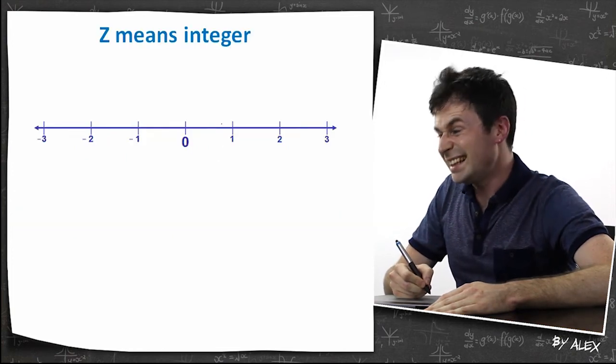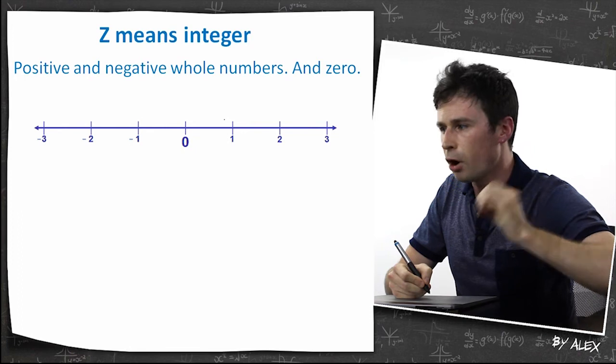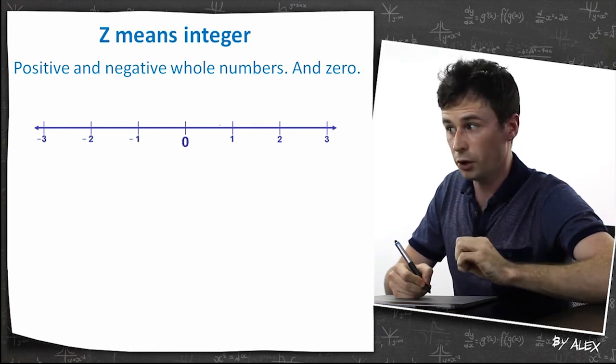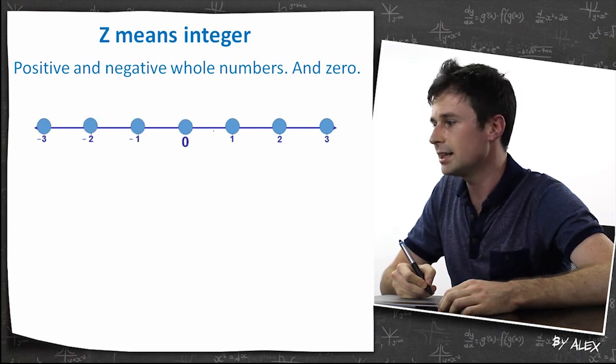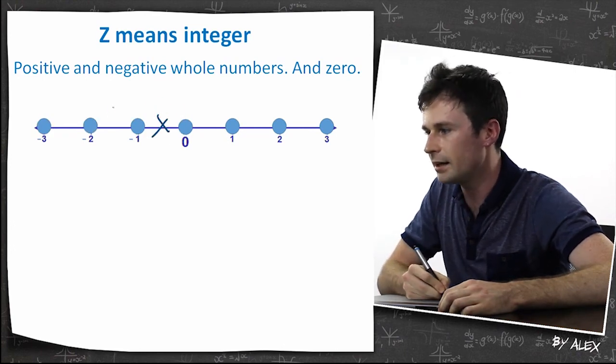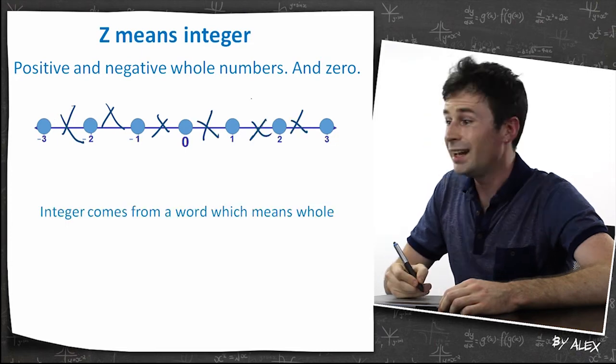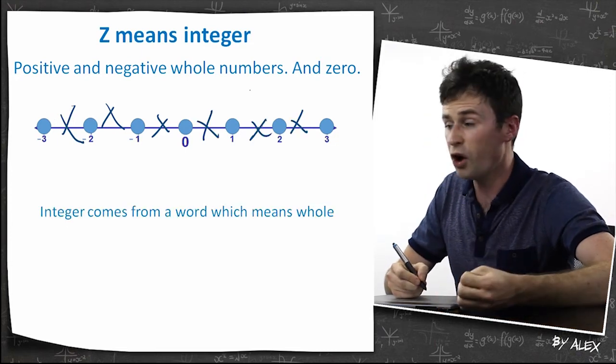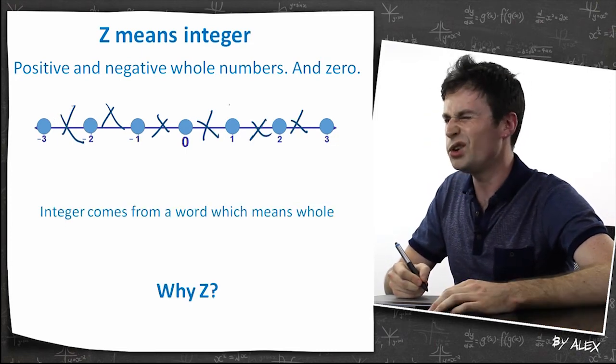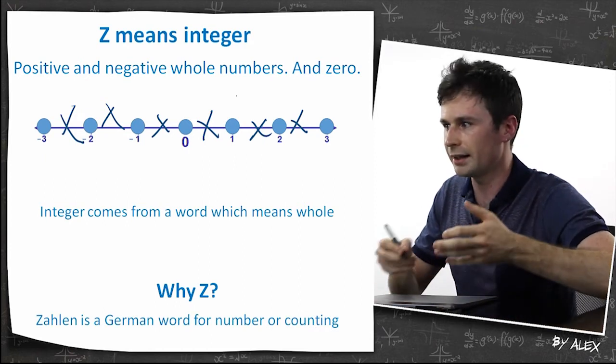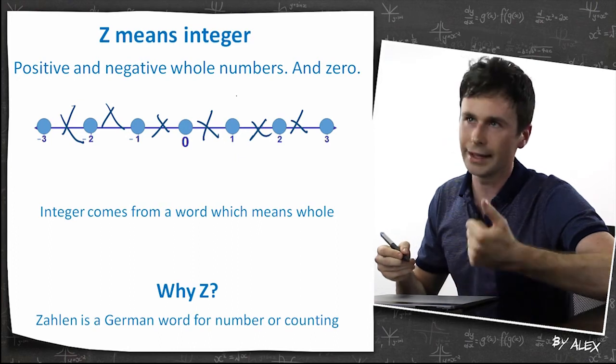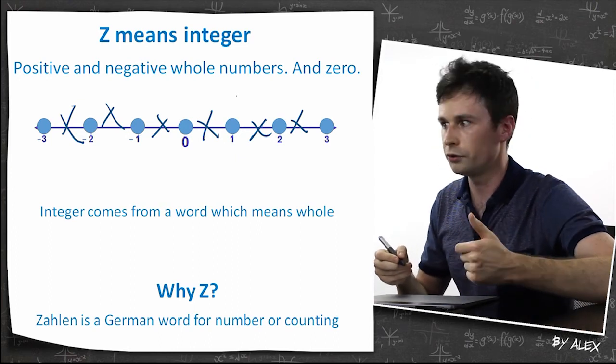Whereas Z means integer. An integer is just a positive and negative whole number and zero, basically. So it can be any of these things, but it can't be anything in between. It has to be a whole number. Integer actually comes from a word which means whole. But you might ask, why do they use Z then? Zahlen is actually a German word for number or counting, and if you look at an integer, these are numbers you can count: negative one, negative two, negative three, one, two, three.